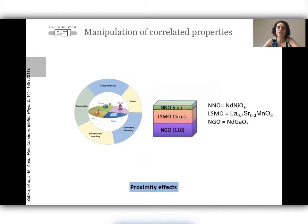The system we have studied is a thin layer of neodymium nickelate, five unit cells thick, deposited on LSMO with x=0.33, 15 unit cells thick. So LSMO is what we call the proximity layer. And we have deposited this bilayer on an NGO substrate.